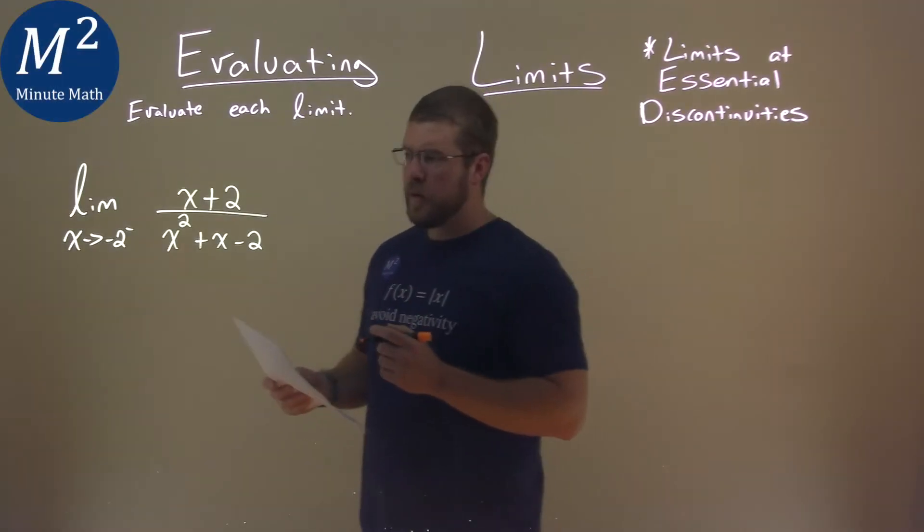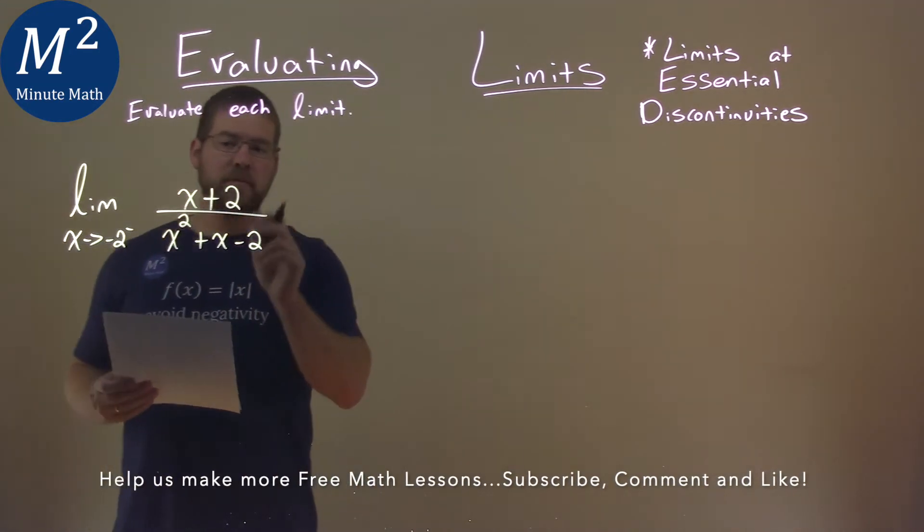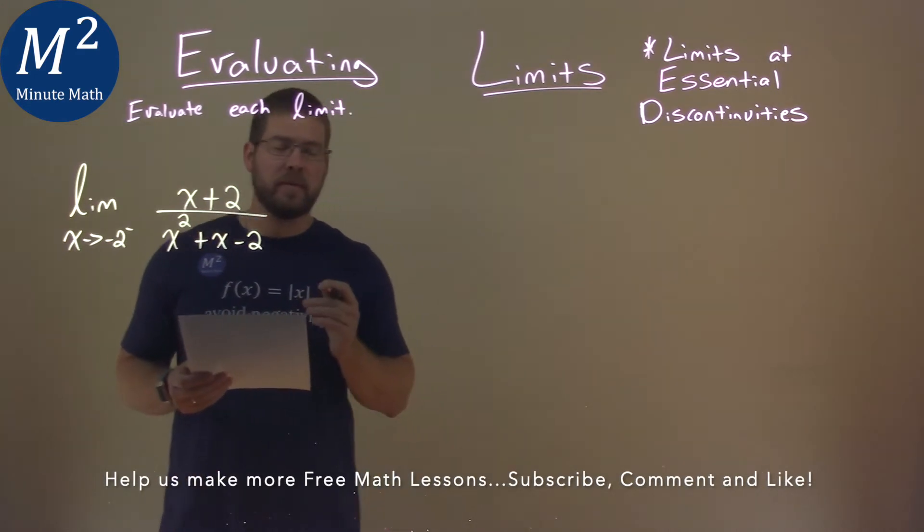We're given this limit right here. The limit as x approaches negative 2 from the left of x plus 2 over x squared plus x minus 2, and we have to evaluate this limit.